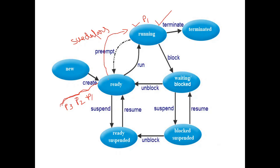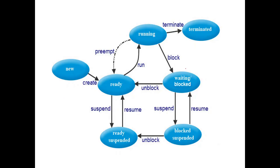There are schedulers whose work is to pick a process from the ready state and send it to the running state — that is done by the schedulers. The operating system uses schedulers to pick a particular process and assign it to the CPU. Any process can be picked by the CPU based on the scheduling algorithms and sent from ready state to running state.